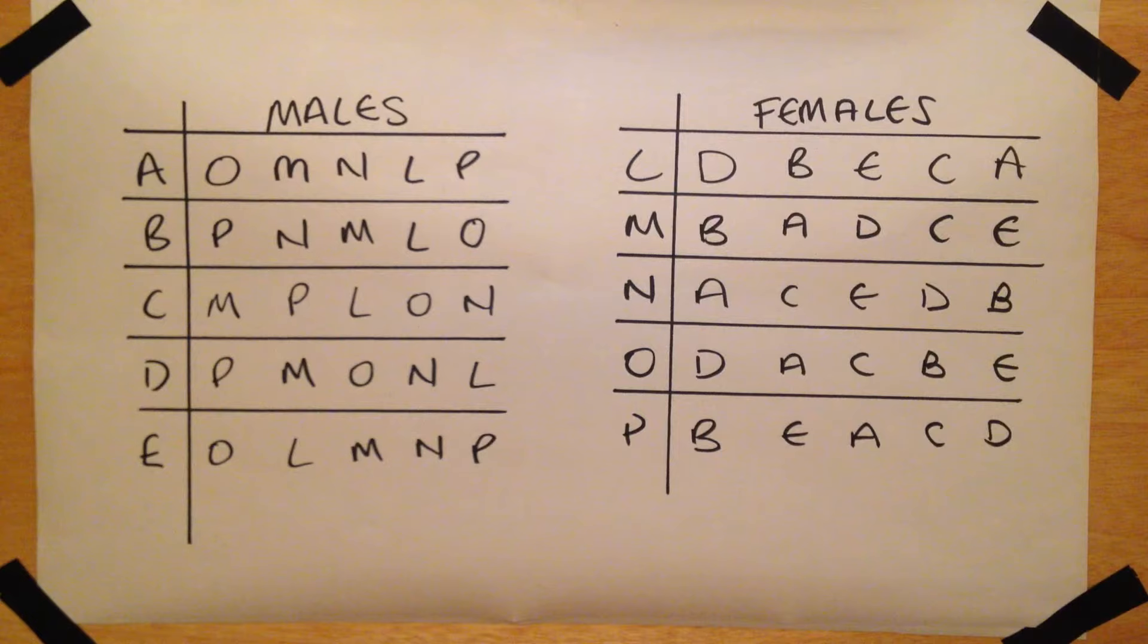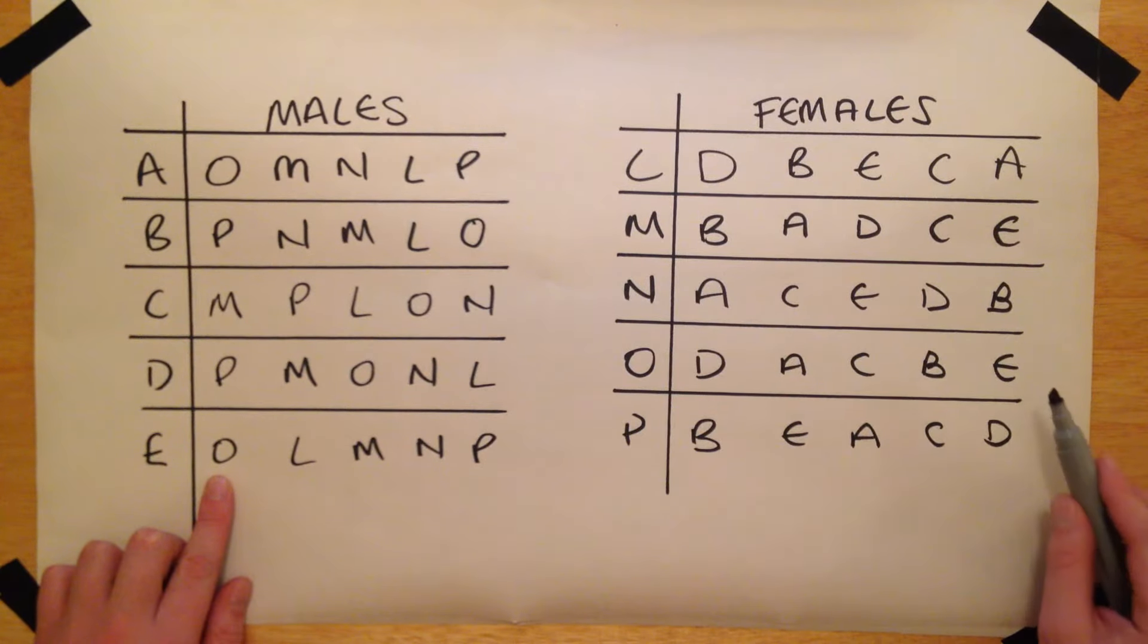It is important that this ranking is complete so that each person has a specified preference for each person in the opposite set. Note that it is not necessary for preferences to be reciprocated. For example, while person O is person E's top choice, E is the least favourable match from O's perspective.